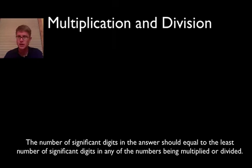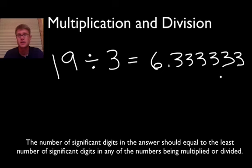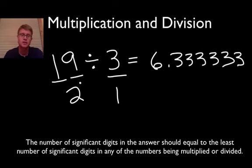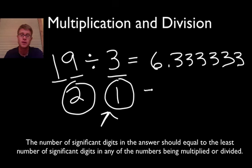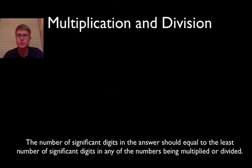Let's try division: 19 ÷ 3. The calculator gives 6.3333 repeating, but you'd never turn that in because it's far more precise than the measurements. 19 has 2 significant digits; 3 has 1 significant digit. So the answer can only have 1 significant digit. The answer is simply 6. Significant digits actually make your job a little bit easier.